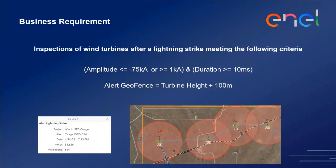On the lower left, this is what a typical alert lightning strike notification looks like. It lists the project name, our internal SAP plant code, and then the project name. This alert was triggered for wind turbine C-14, showing the date, amplitude, and duration.